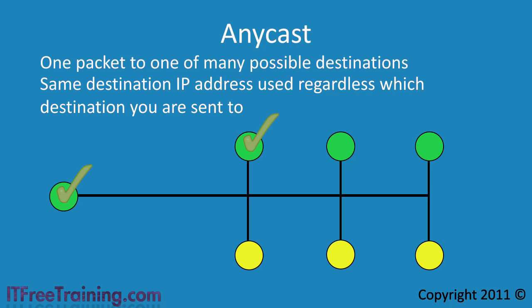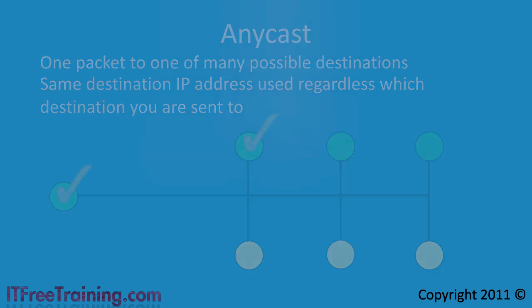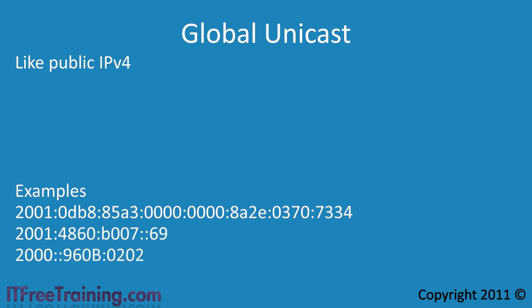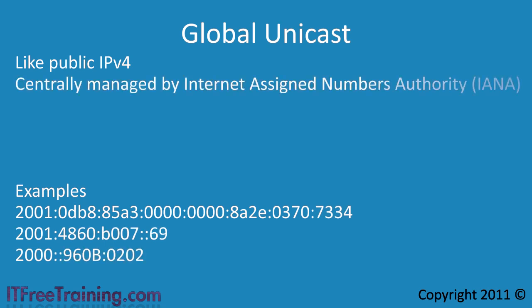Looking closer at unicast addresses, these can be divided into three types. First there is the global unicast address, which is like the public IP address used in IP version 4. Global unicast addresses are centrally managed and routable on the internet. You can tell a global unicast address because it starts with 2000 or 2001. When you receive a registered global IP version 6 unicast address, you can be assured that your IP address is unique and that anyone on the internet will be able to contact you using it.